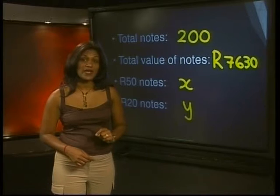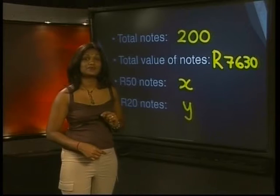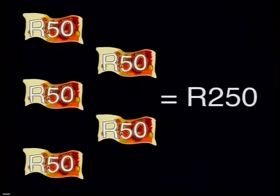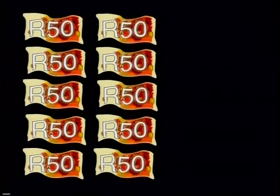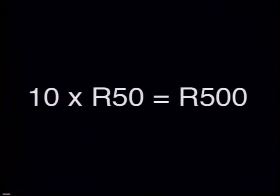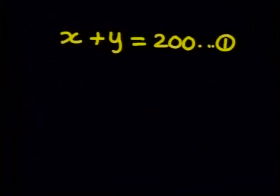Can we find a way of writing down the total value of all the 50 rand notes together? Think about it. If there are 5 fifty rand notes the total is 250 rands. If there are 10 notes the total is 500 rands. So we multiply the number of notes by 50. This means that we take the number of 50 rand notes and multiply it by the value of the note which is 50 in this case. So we have a total value of 50 times x.